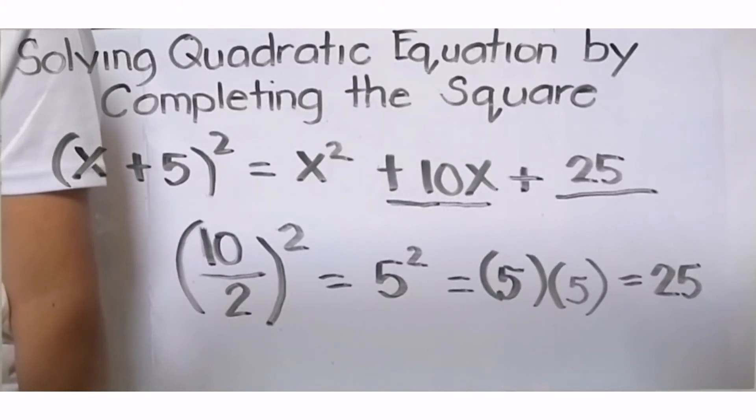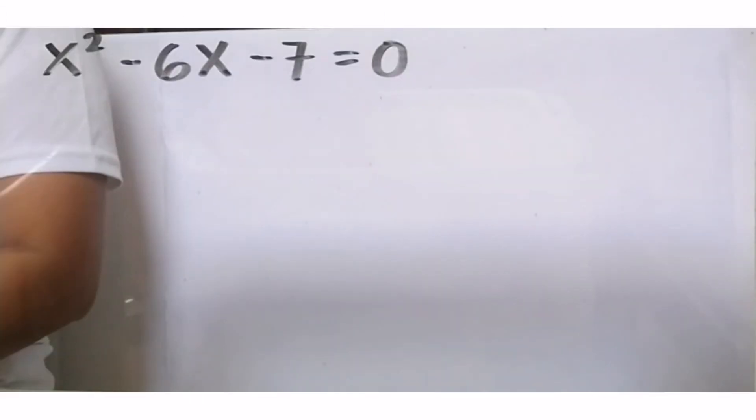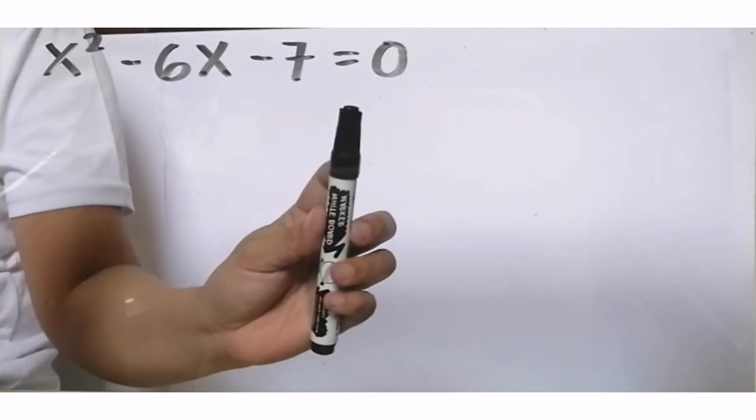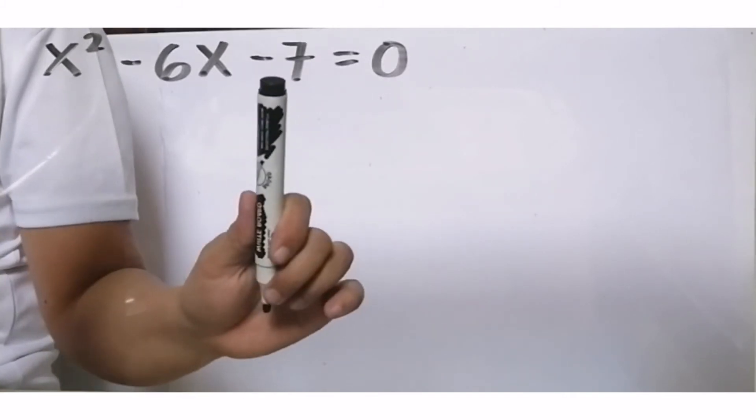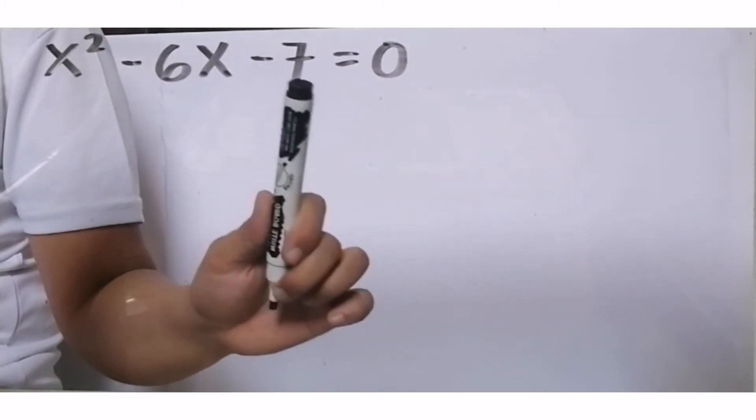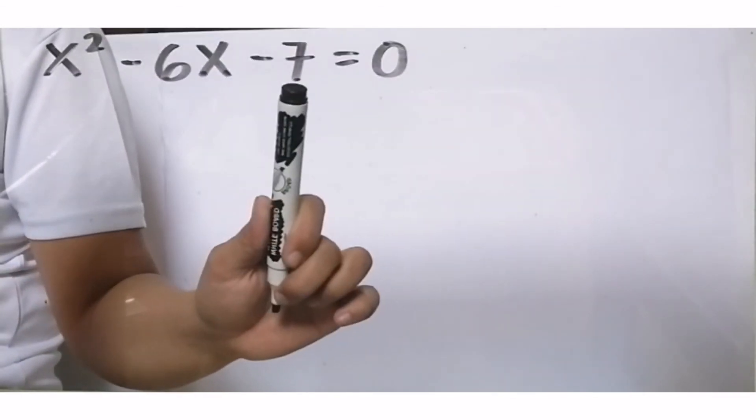Earlier, we learned how to square a binomial and when we completed the square of a binomial, we also learned how to find the last term when it's missing. Now, let's apply that process to solve and find the solutions for this quadratic equation. We will solve this using the completing the square process. Let's begin. Step 1, apply the addition property of equality. Remove negative 7 from the left side, because it won't complete this. Remove it by means of APE.